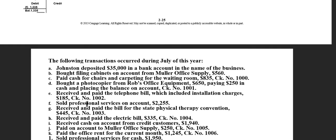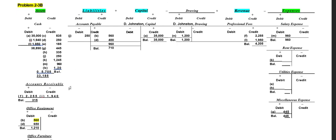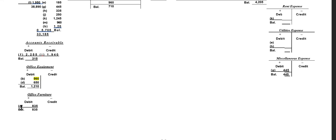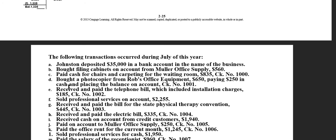Third transaction: the business paid cash for chairs and carpeting for the waiting room, $835. Cash is involved and they acquired an asset. We record an increase in one asset for the chairs and carpeting and a decrease in another asset, cash, to show that we paid. We debit office furniture $835 on the left side and credit cash $835 on the right side.